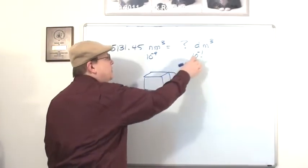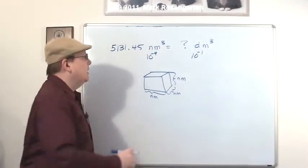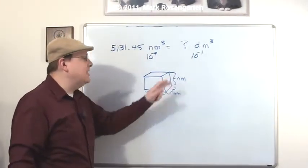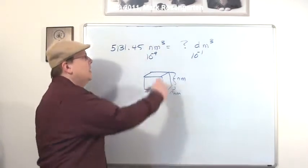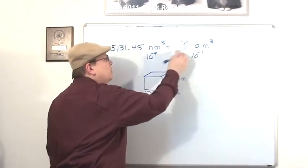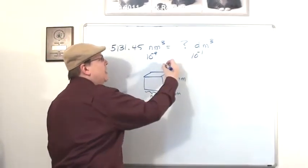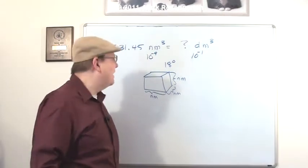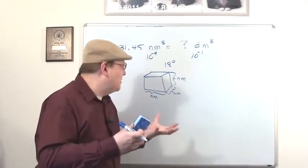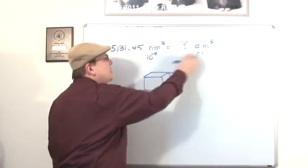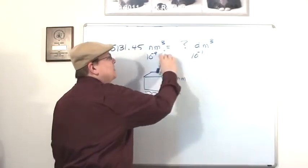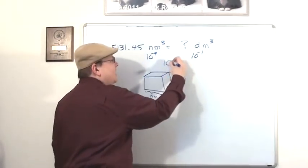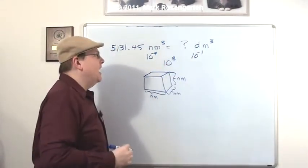So this, finding the difference between the two factors, is going to be our first step, and then we're going to have to cube it to account for the fact that there are three dimensions that we're dealing with here. So there's eight powers of 10 difference between nanometer and decimeter. That's 10 to the eighth. There are eight powers of 10 difference between 10 to the negative ninth and 10 to the negative first. That's a 10 to the eighth difference between nanometers and decimeters.